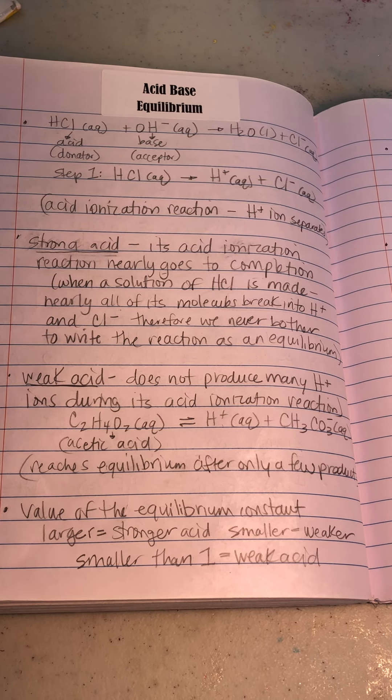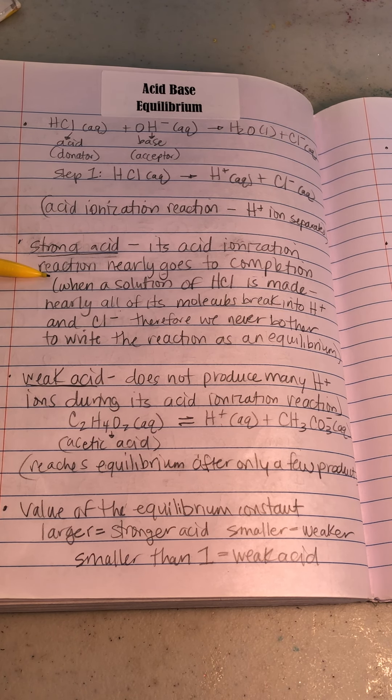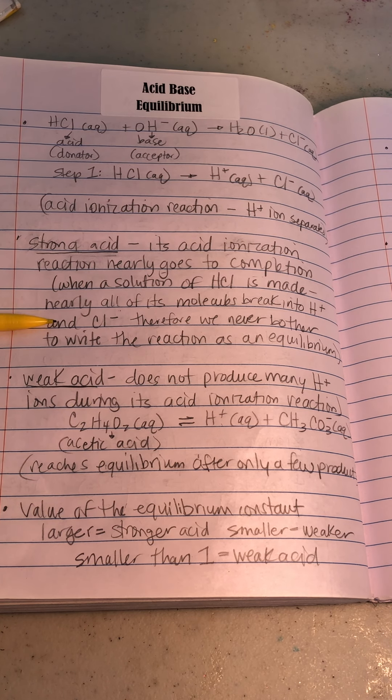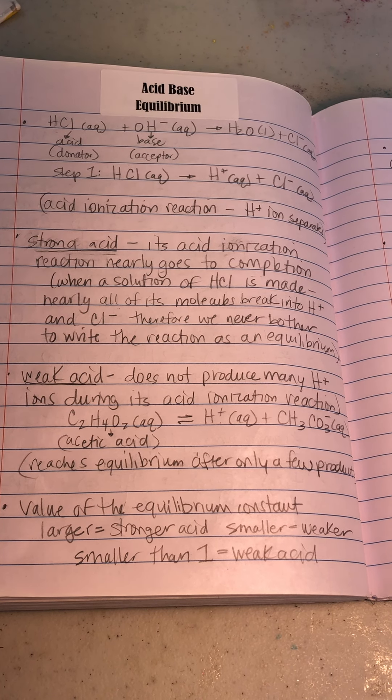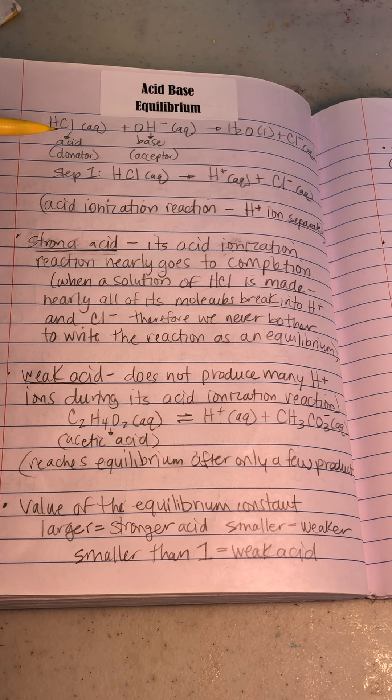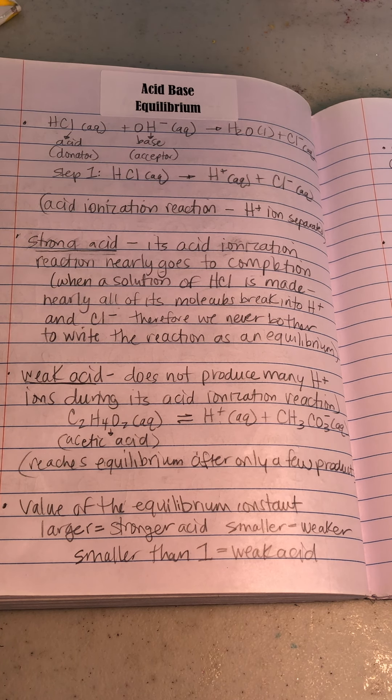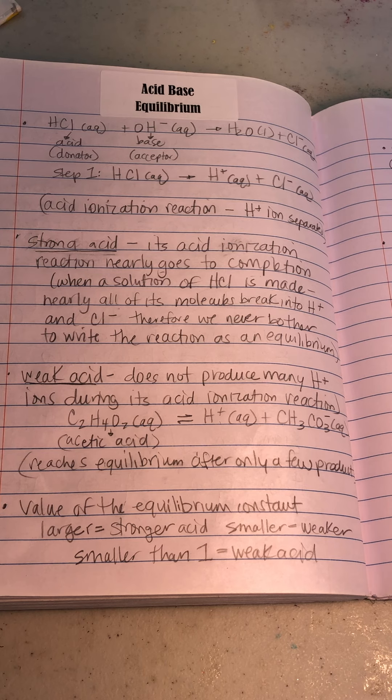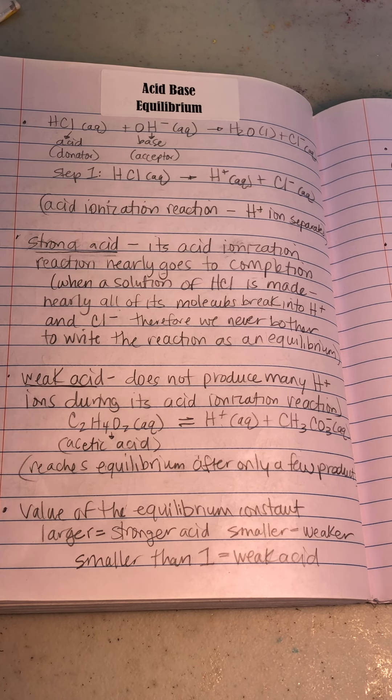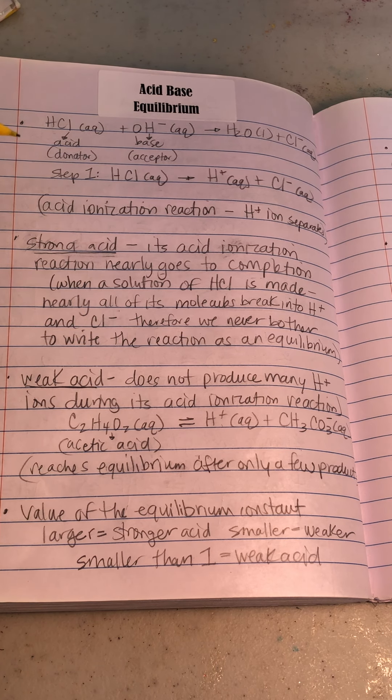It's a specific reaction with this acid-base world that is creating the ion, the ionized, the charged-up side of the H+s and the Cl. And so in some substances, it's really easy for the H's to come off of there, to separate. And in other substances, it's not as easy for the H's to separate. And so this is where the categories of strong versus weak acid come into play. And it has to do with linking to the chemical equilibrium side. So strong acid, its acid ionization, that means step one, reaction nearly goes to completion. When a solution of HCl is made, nearly all of the molecules break into H+ and Cls.